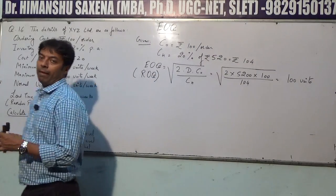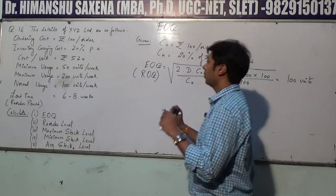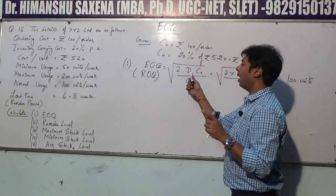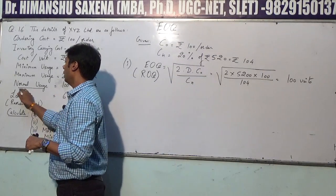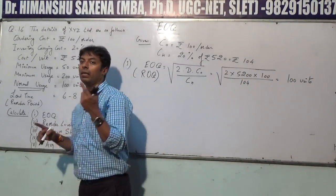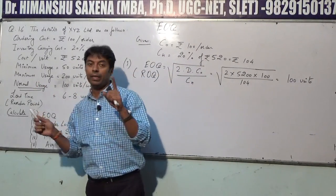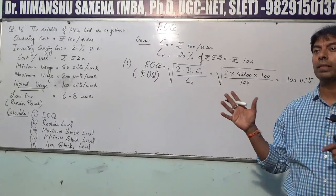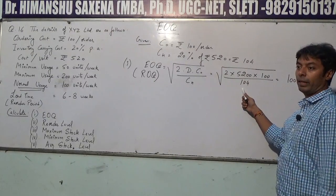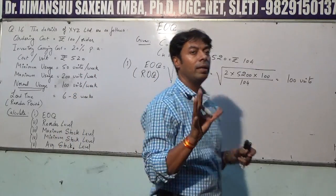The Economic Ordering Quantity, also called Reorder Quantity (ROQ), is 100 units. To calculate EOQ, you need the annual demand — derived from normal usage, average usage, consumption, or requirement — multiplied by 52 weeks. Here: annual demand = 5200, ordering cost = ₹100, carrying cost = ₹104, giving EOQ = 100 units. This means the manager should place an order of 100 units each time.